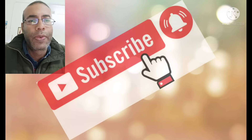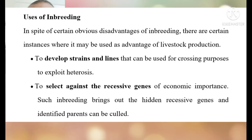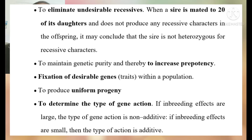Now I will discuss a few important uses of inbreeding. Inbreeding is used for developing new strains or lines. It is also used for selecting against undesirable recessive genes by increasing homozygosity. This is done by mating a sire with 20 or more of its daughters. If all offspring are free from the recessive trait, we can assume the bull is free from that recessive gene.